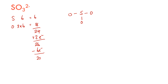These 20 valence electrons are used to fill the lone pairs on each of the oxygen terminal atoms. Each oxygen gets 3 lone pairs, so 6 times 3 is 18 electrons. Subtracting 18 from our total gives us 2 electrons remaining, which form a lone pair on sulfur.